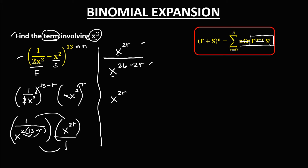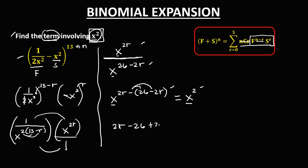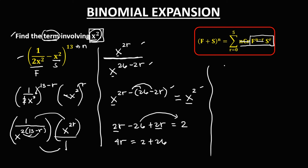Using the law of exponents — same base with division means we subtract exponents — we write this as x to the power (2r minus (26 minus 2r)). Since we're looking for x to the power 2, the bases are equal so we equate the exponents: 2r minus 26 plus 2r equals 2. Simplifying, 4r minus 26 equals 2.